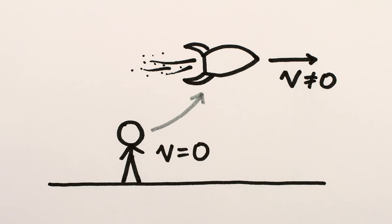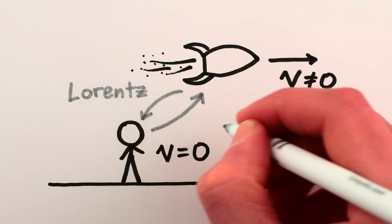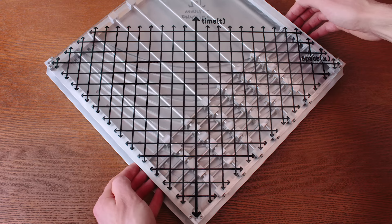In our universe, when you change from a non-moving perspective to a moving one, or vice versa, that change of perspective is represented by what's called a Lorentz transformation.